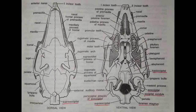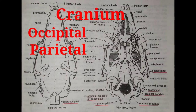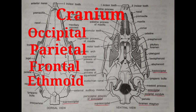The cranium or brain case, the case that encloses the brain, consists of four regions or four rings. The posterior-most is the occipital ring, then in front of it is the parietal ring, then in front is the frontal ring, and the anterior-most is the ethmoidal ring.